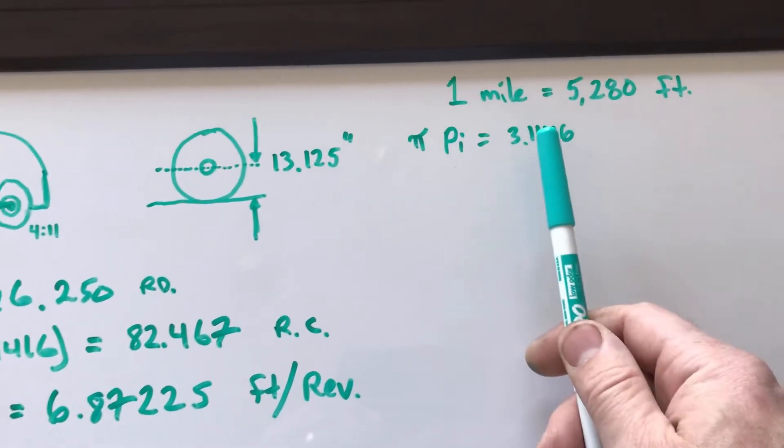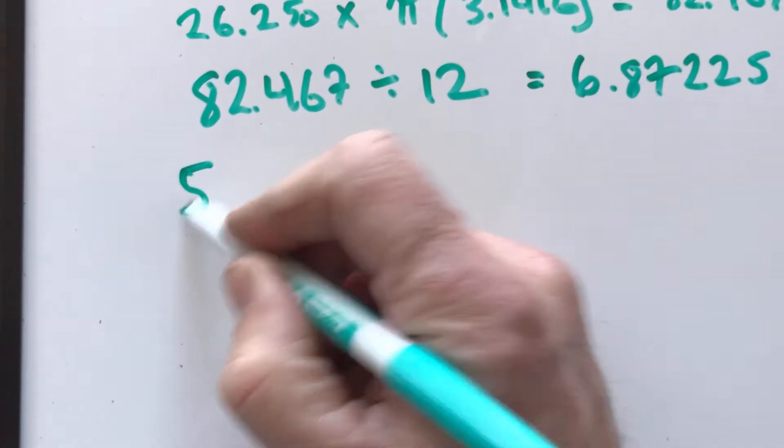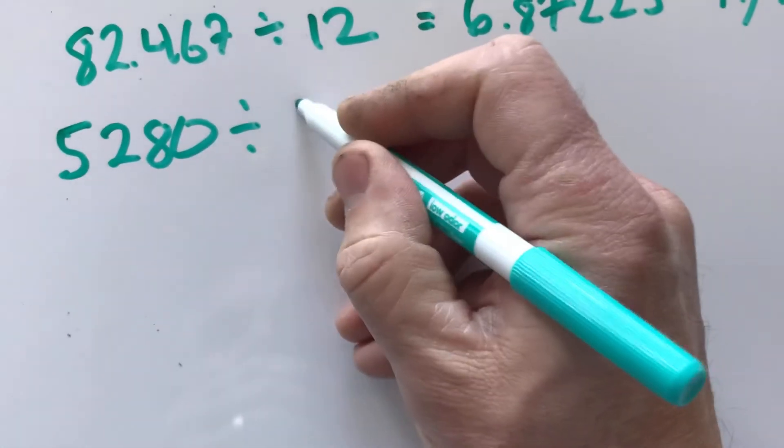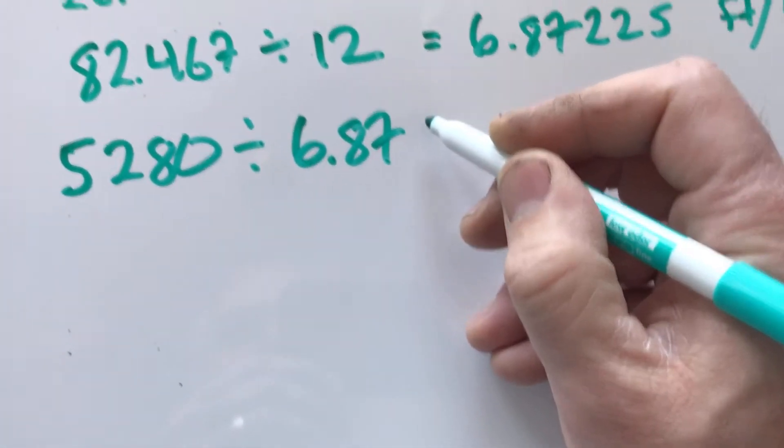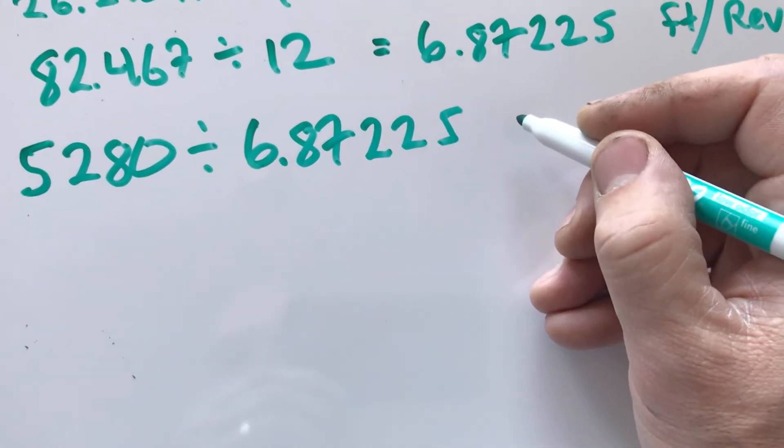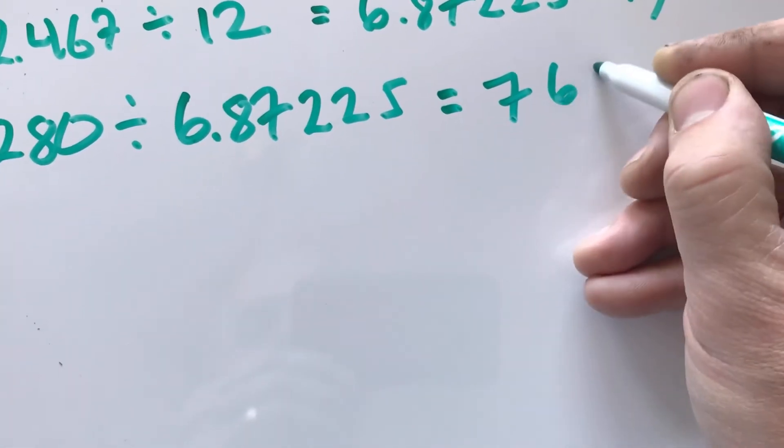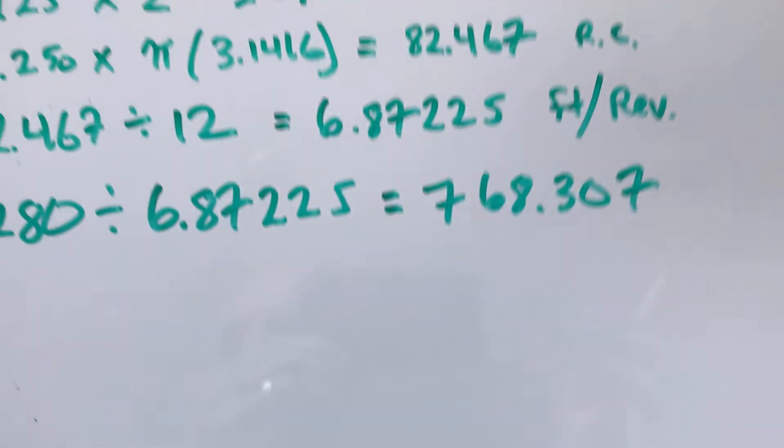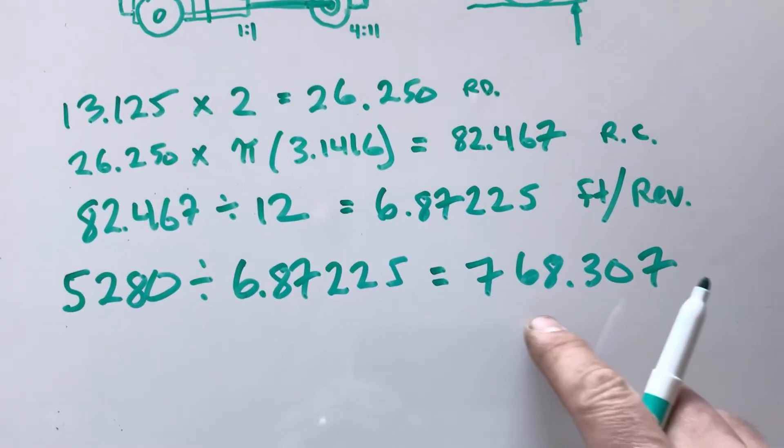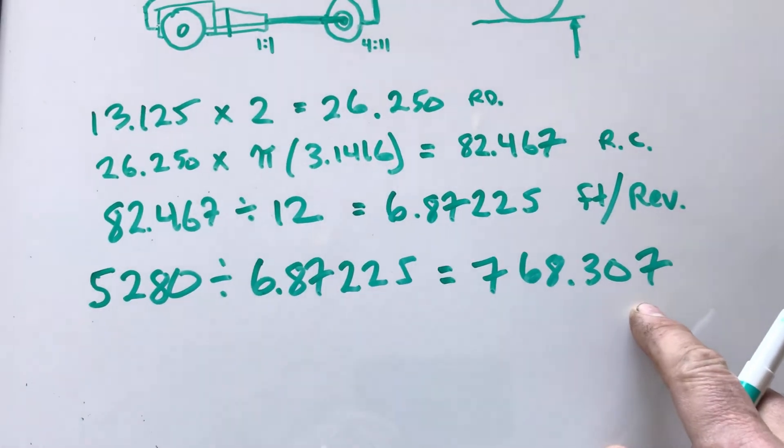We know that a mile is 5,280 feet, so we take 5,280 divided by our feet per revolution, 6.87225. That gives me 768.307 revolutions. Seven hundred and sixty eight revolutions per mile. That's the tire revolution.